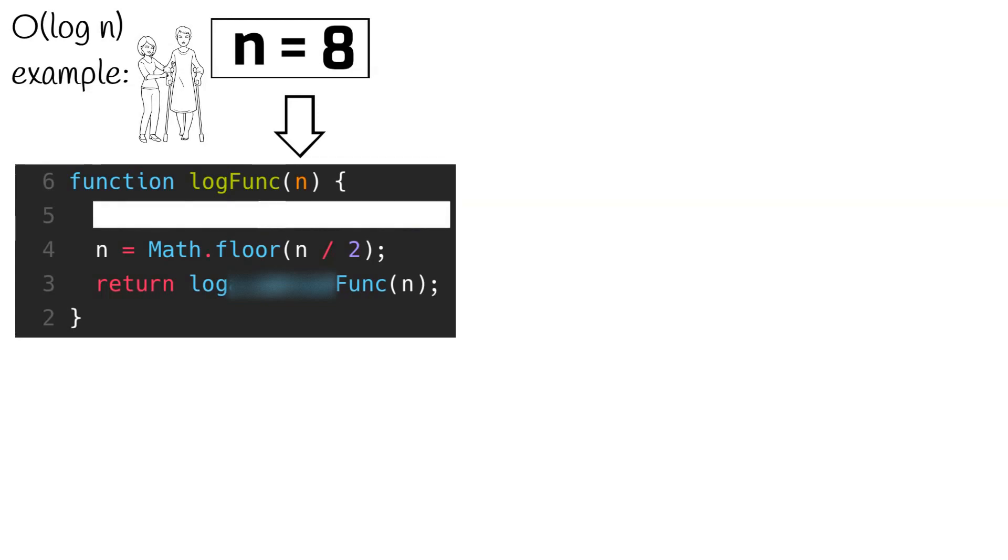For now, let's just ignore this first line and focus on what the function is actually doing. So when we pass a number n to this function, it divides n by 2 or splits it in half, and then calls itself with the new halved or divided number. Let's visualize this using a graph.